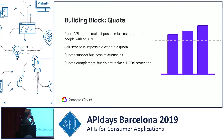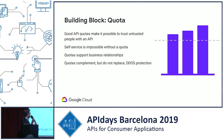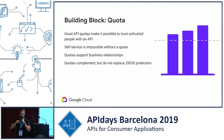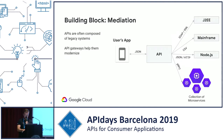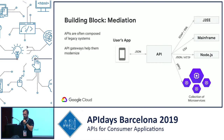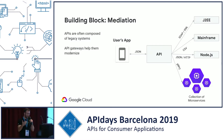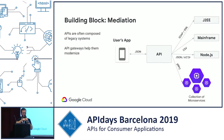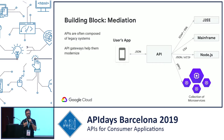There is no successful API without Quota. Quota lets you trust untrusted consumers — without it, one consumer can collapse the environment and impact all other customers. Putting limits on API consumption is key to success. On mediation: not everyone has microservices yet. You may need to expose mainframes, Java applications, Node.js, or even gRPC backends. You need to mediate and offer a common language through an API contract to your consumers — and keep that contract.